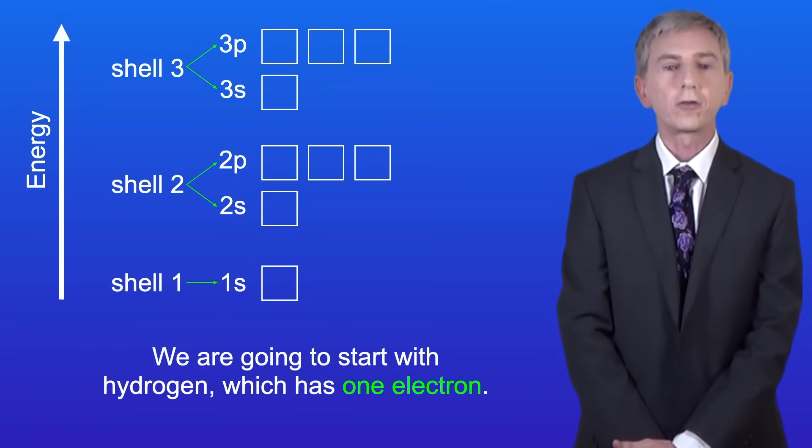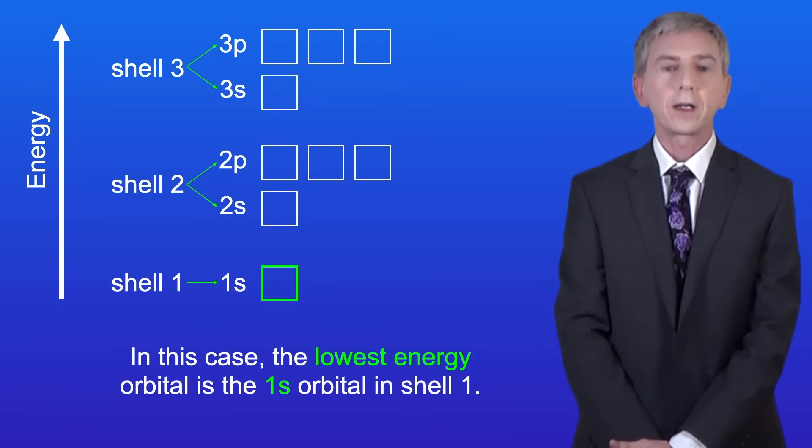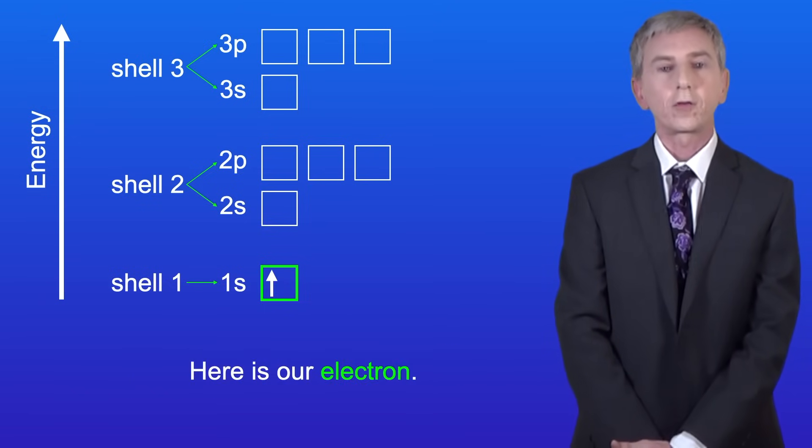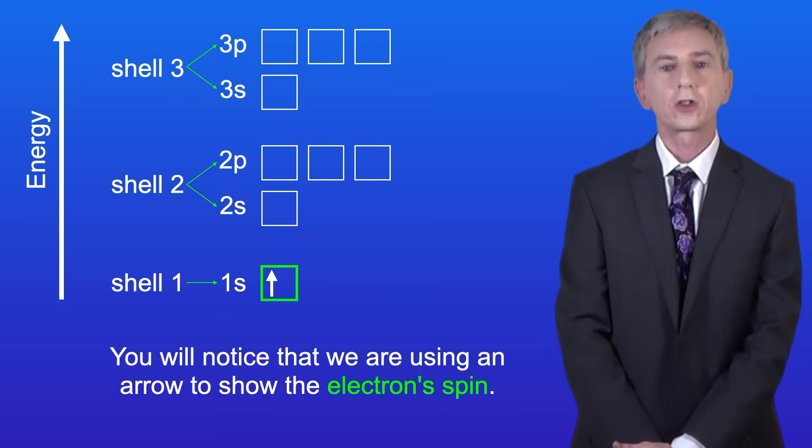We're going to start with hydrogen, which has got one electron. In this case, the lowest energy orbital is the 1s orbital in shell 1. So here's our electron, and you'll notice that we're using an arrow to show the electron's spin.